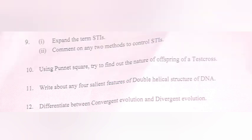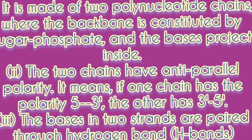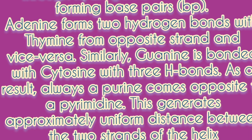Question 11. Write about any four salient features of the double helical structure of DNA. Answer: 1. It is made of two polynucleotide chains where the backbone is constituted by sugar-phosphate and the bases project inside. 2. The two chains have anti-parallel polarity — if one chain has polarity 5' to 3', the other has 3' to 5'. 3. The bases in two strands are paired through hydrogen bonds, forming base pairs.